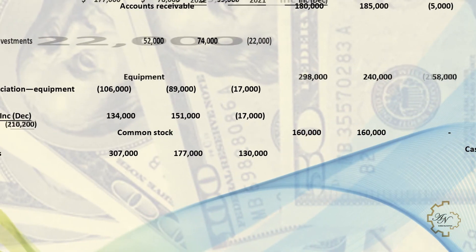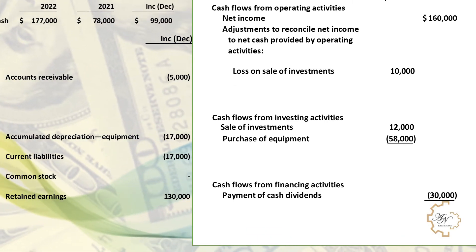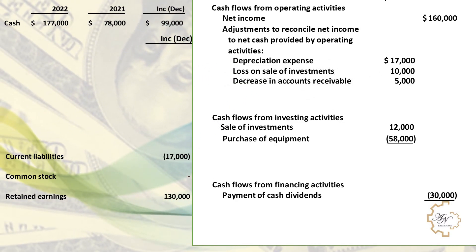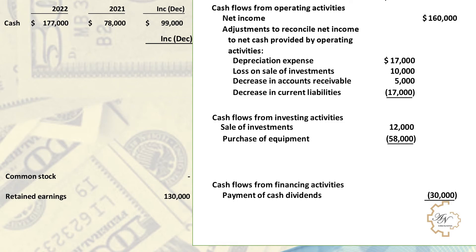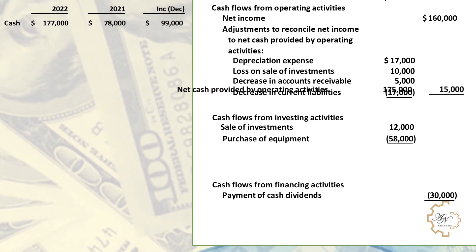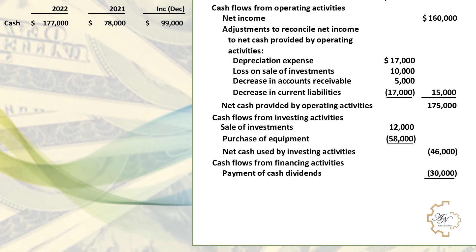Returning to the comparative balance sheets for remaining accounts: the decrease in accounts receivable is added to operating activities. The change in accumulated depreciation represents depreciation expense and is added to operating activities. The decrease in current liabilities is deducted from operating activities. There is no change in common stock, so no effect on the statement. The retained earnings account does not directly affect the statement. The adjustments total: 17 + 10 + 5 − 17 = 15. Net cash provided by operating activities is 160 + 15 = $175,000. Net cash used in investing activities is 12 − 58 = −$46,000. Net cash used in financing activities is −$30,000.